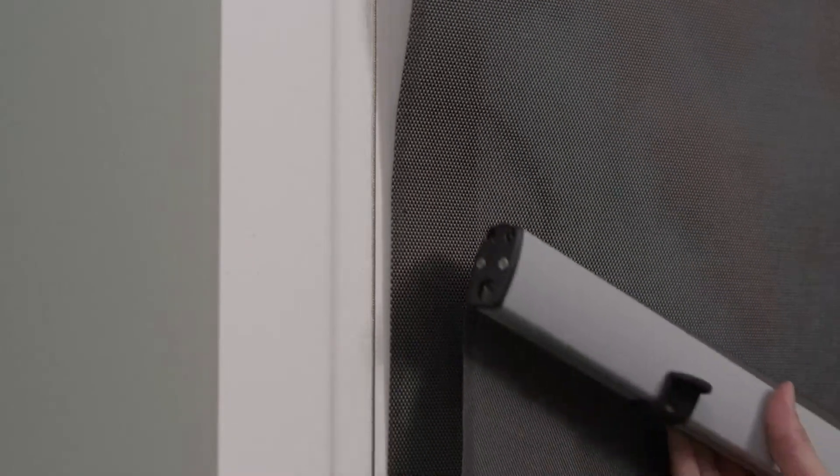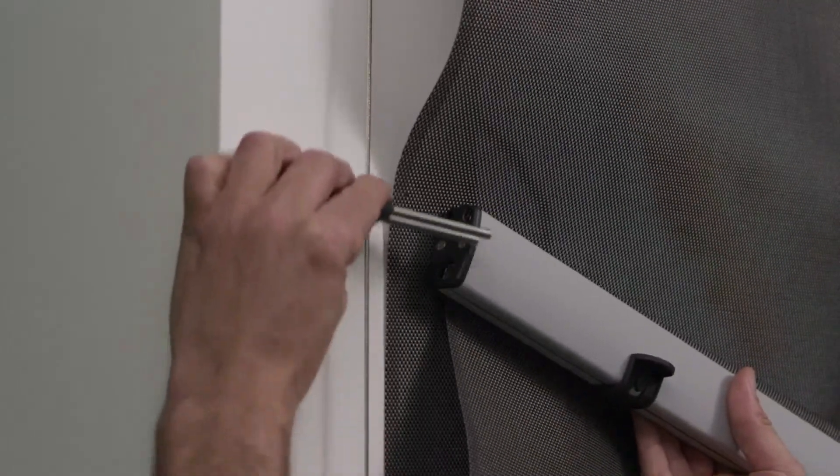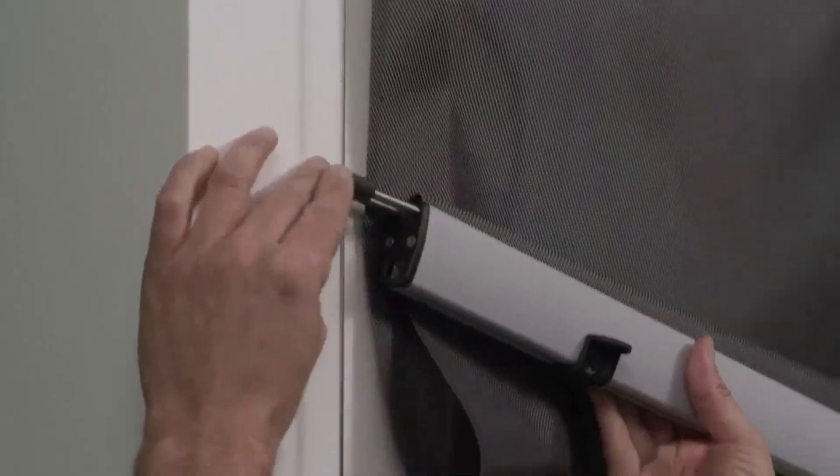Lower the awning to a position where it can be reached. Tilt the bottom rail and insert the floating end cap into the rail. Repeat for the other side.